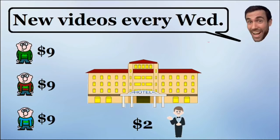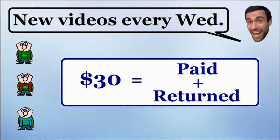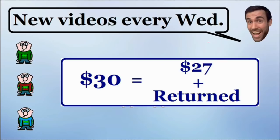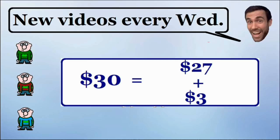The $30 total must be equal to the amount of money paid plus the amount of money returned. The amount of money paid is any money that they did not get back — that is equal to the $25 for the cost of the room plus the $2 tip. So $25 plus $2 is equal to $27. Now if we add the $27 with the money that was returned to them, which is $3, $27 plus $3 gives us a total of $30. And we have found our missing dollar.